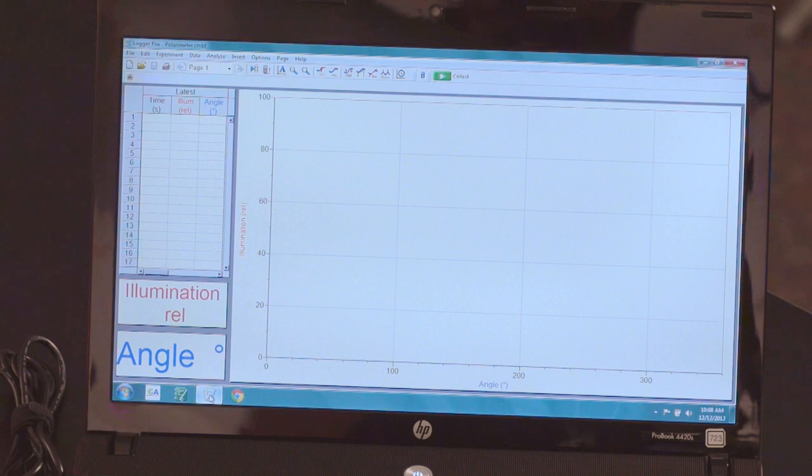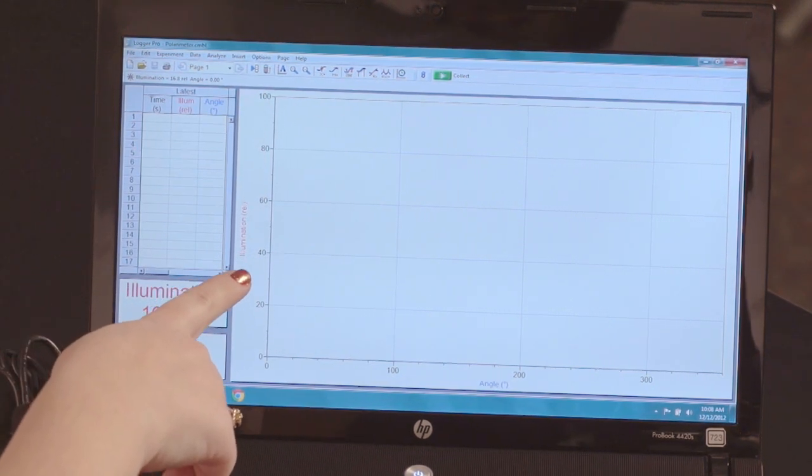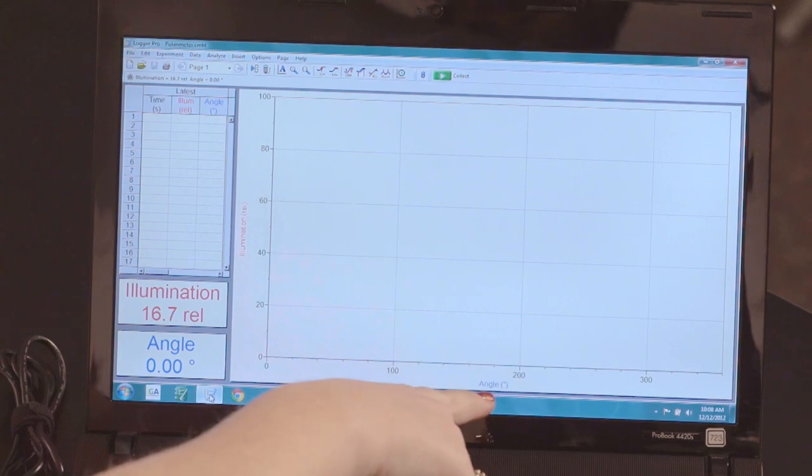Make sure you note the axes on the graph. The Y axis should be illumination and the X axis should be angle.